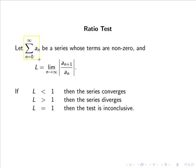Let the sum from n=0 to infinity of a_n be a series whose terms are nonzero, and let L equal the limit as n goes to infinity of the absolute value of a_{n+1} divided by a_n.